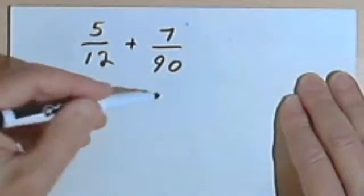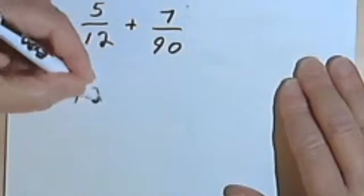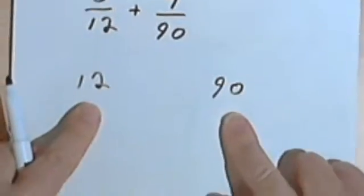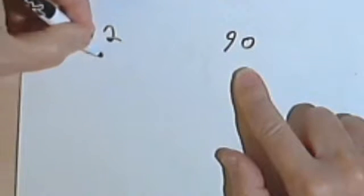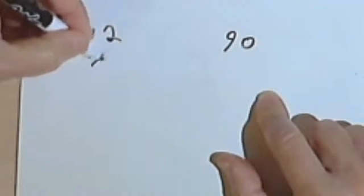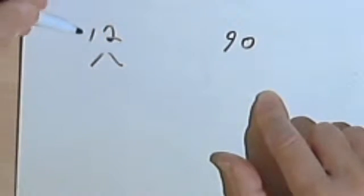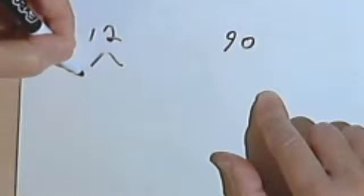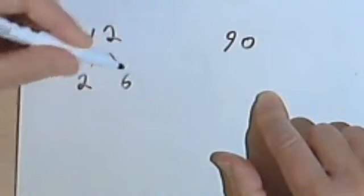So let's take the numbers 12 and 90. We're going to make a factor tree for each of these numbers. So 12, whenever I see an even number a lot of times I have to just start out dividing by 2. So I'll divide the 12 by 2, and that'll give me a 6.